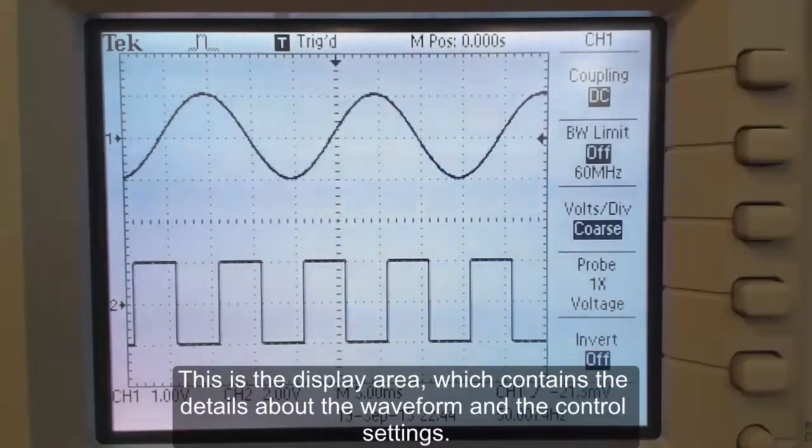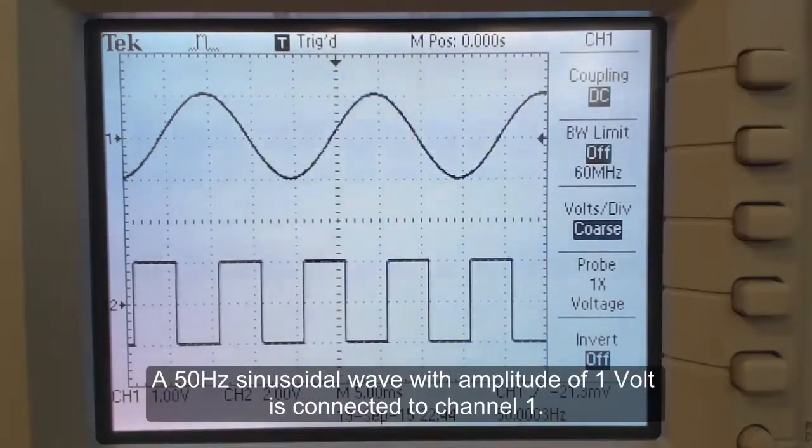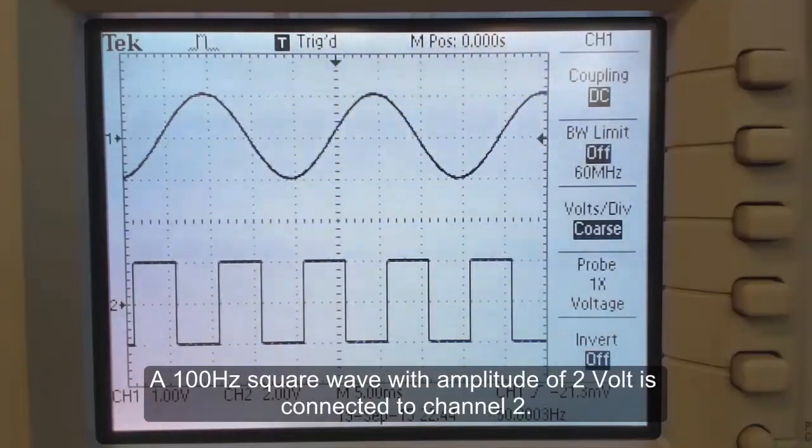This is the display area, which contains the details about the waveform and the control settings. A 50 Hz sinusoidal wave with an amplitude of 1 volt is connected to channel 1. A 100 Hz square wave with an amplitude of 2 volts is connected to channel 2.